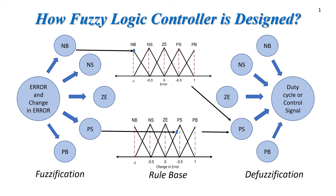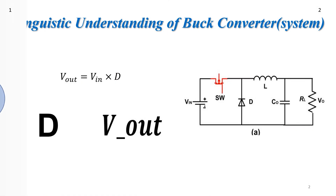This exact value is then provided to the controller or the system where it is required. Now let us understand how we understand the system's properties in linguistic form in order to implement a fuzzy logic controller.